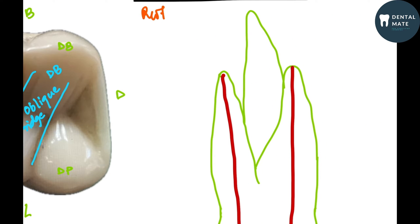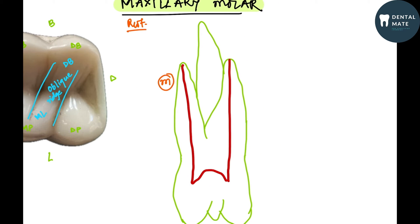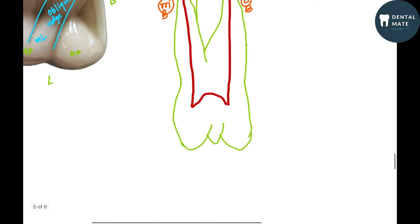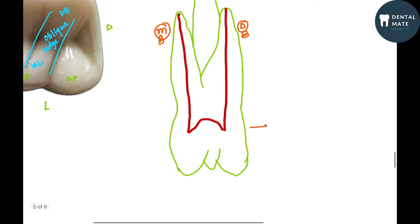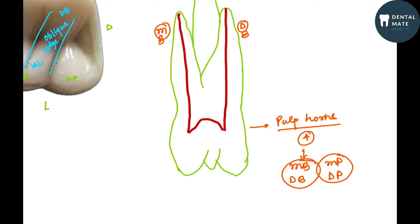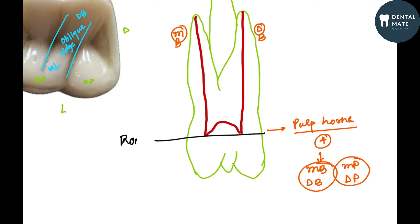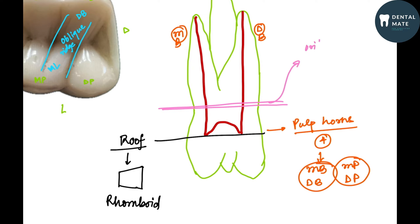The maxillary molar has three roots: mesiobuccal, distobuccal, and palatal root. At the level of the pulp chamber, there are four pulp horns: mesiobuccal, distobuccal, mesiopalatal, and distopalatal. If you take a cross section at the pulpal roof level, the roof is rhomboidal in shape. Progressing towards the floor, the pulp chamber merges lingually.